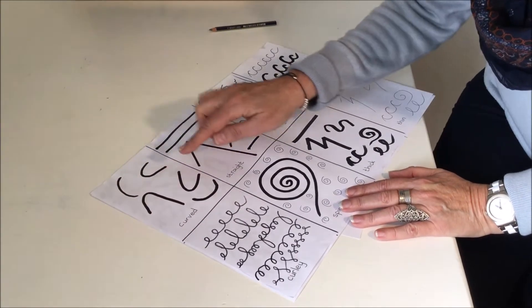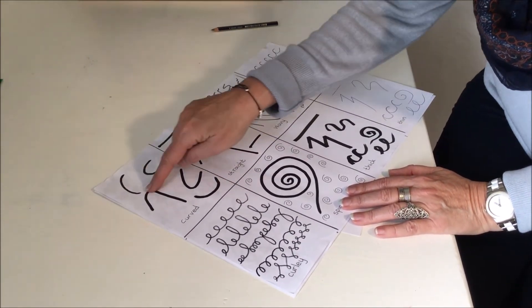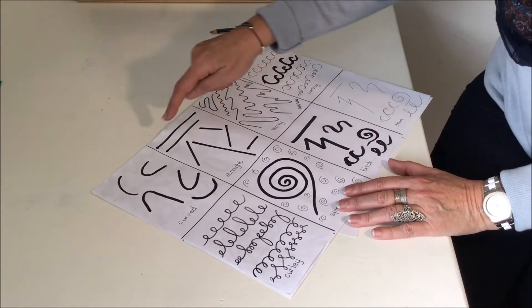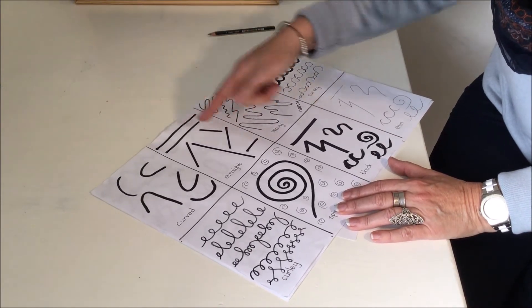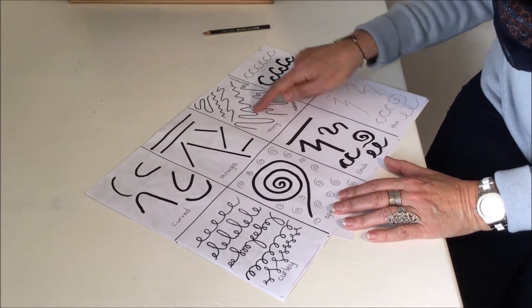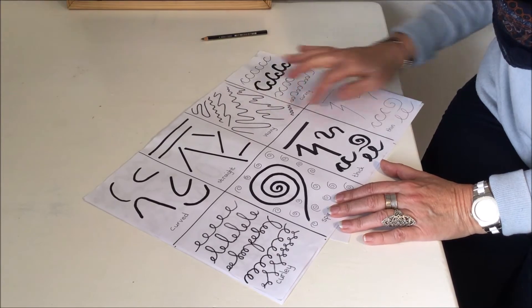We get curved lines, sharp curves and just light curves. We get straight lines. We get wavy lines, all different kinds of wavy lines.